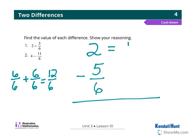So 2 wholes is equivalent to 12 sixths. Now I have the same denominators, so I can just subtract my numerators. I know 12 minus 5 is 7, and I keep my denominator. So 7 sixths is the answer.